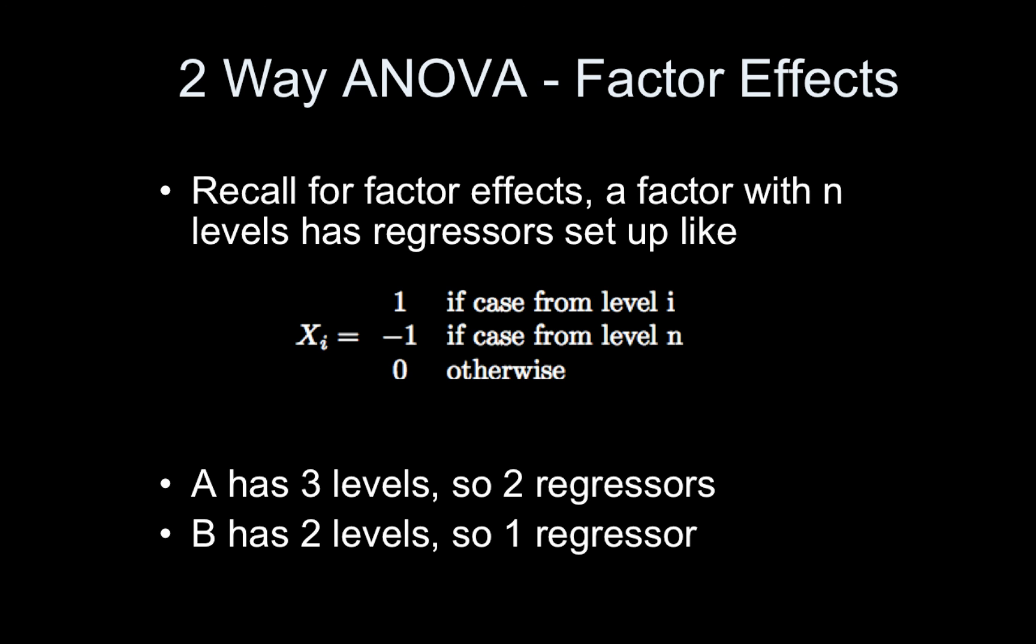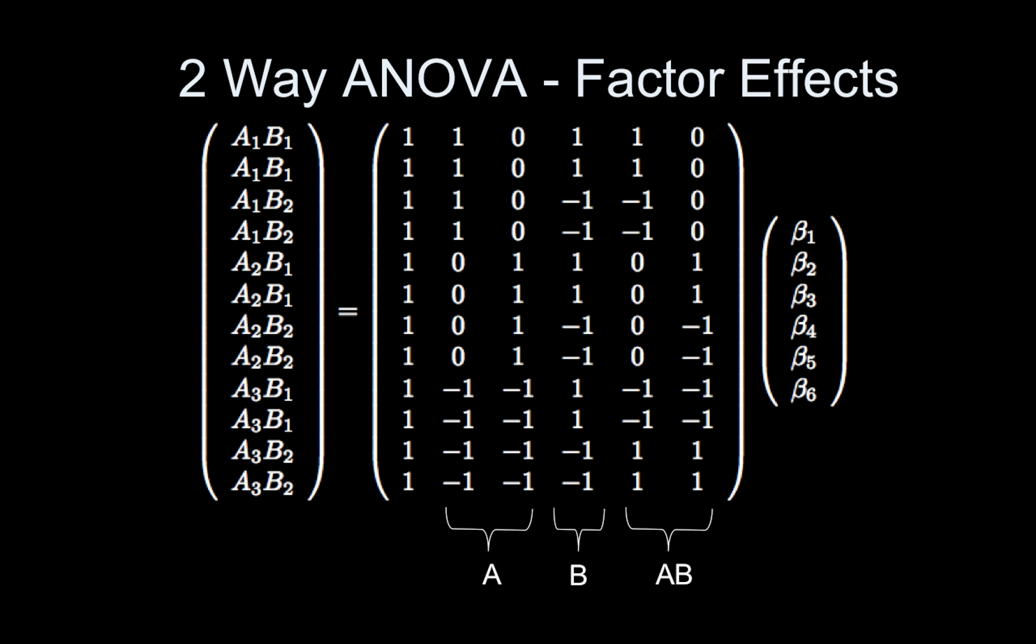And I haven't talked about the interaction yet, and I'll show you how you get the interaction because it's important we also model that. All right, so here's the column of ones. We always start with a column of ones, and then I'm starting with A and following my rule. So first of all, you can see I've chosen A3 as my baseline, so I've already filled in my negative ones in my two regressors for A. The first A regressor has ones for level one of A, zeros for level two of A, negative ones for level three. Second one's going to be the same thing except zeros for level one, ones for level two, negative ones for level three. And then we're done with A.